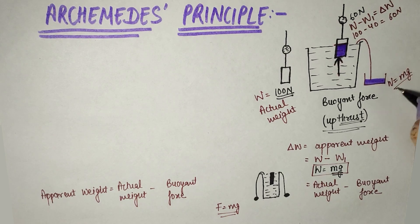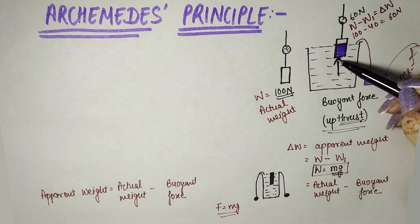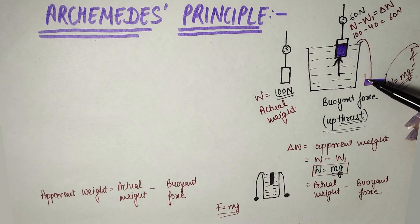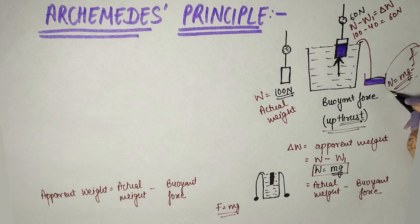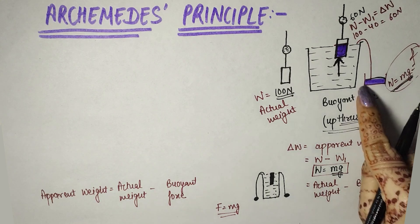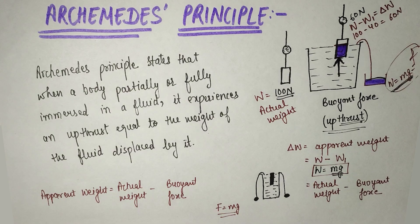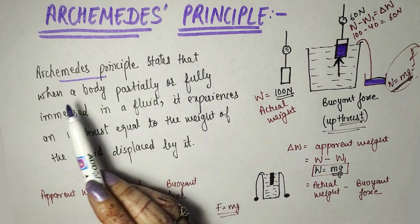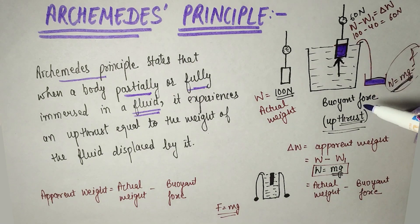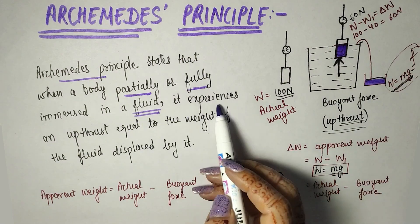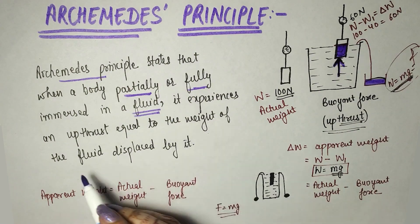W equals mg. The Archimedes Principle states that when a body is partially or fully immersed in a fluid, it experiences an upthrust which is equal to the weight of the fluid displaced by it.